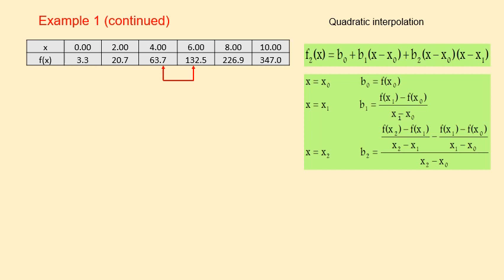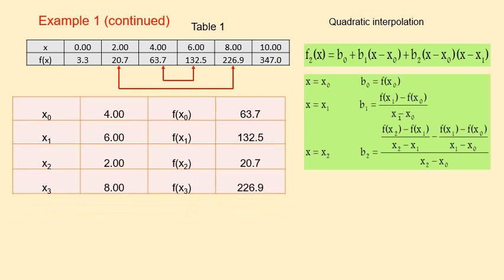We need to reorder the points so that they are as close to and as centered about the unknown x equal to 5 as possible. So we choose 4 and 6 as the x0 and x1 respectively. We choose 2 and 8 as the second interval where 2 is the x2 value.